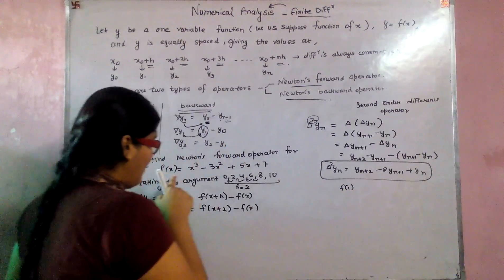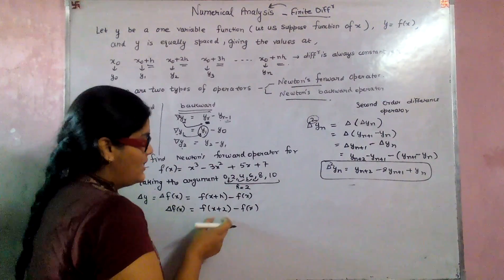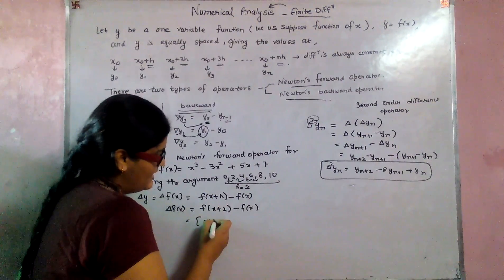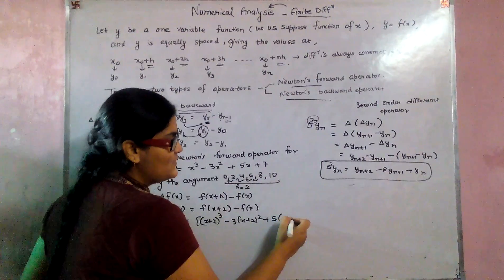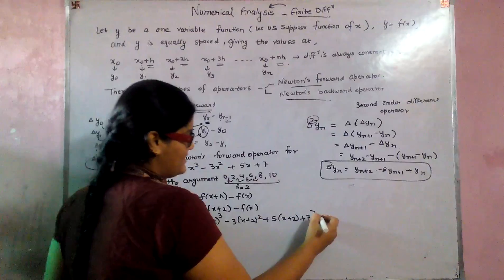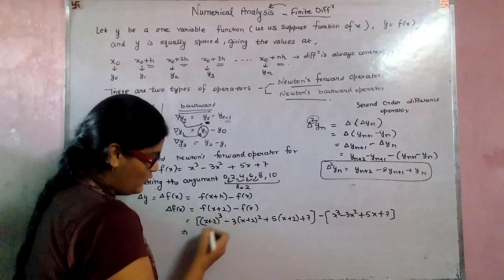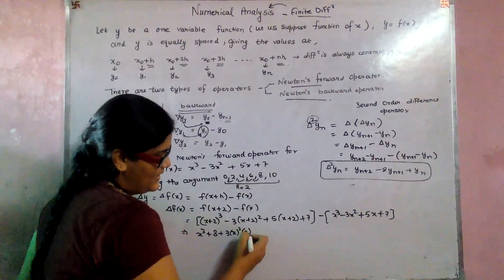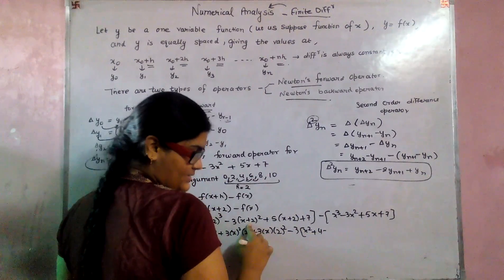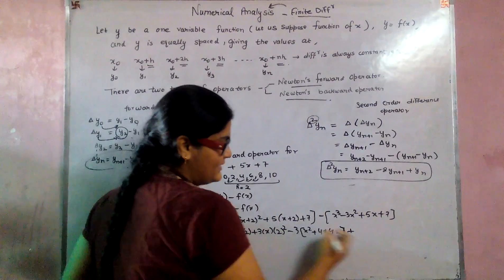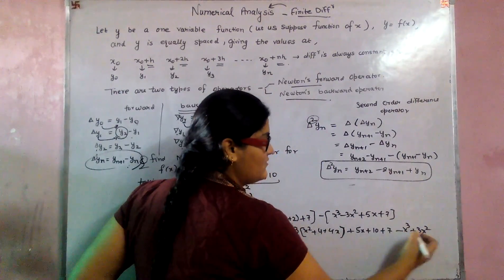To find del f(x), substitute x+2 in place of x: f(x+2) = (x+2)³ - 3(x+2)² + 5(x+2) + 7, minus f(x) = x³ - 3x² + 5x + 7. Expanding (x+2)³ = x³ + 8 + 6x² + 12x, and -3(x+2)² = -3x² - 12 - 12x, plus 5x + 10 + 7.